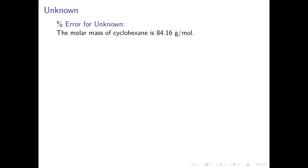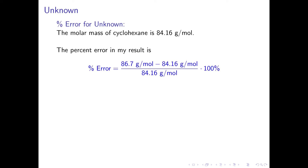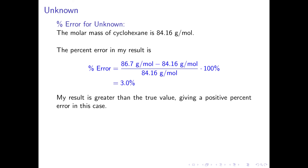As with the acetone, we can now calculate the percent error in our results. The molar mass of cyclohexane is 84.16 grams per mole. Therefore, the percent error is 86.7 grams per mole minus 84.16 grams per mole, divided by 84.16 grams per mole, times 100%, which gives a percent error of 3.0%. In this case, my result is greater than the true value, giving a positive percent error.